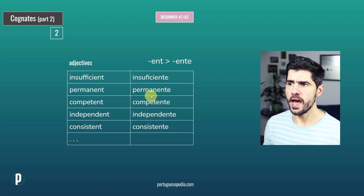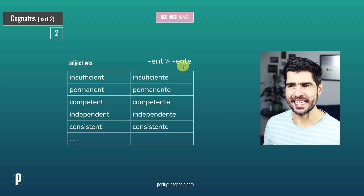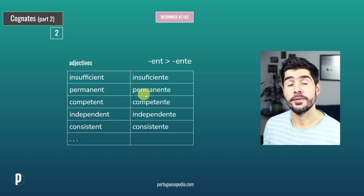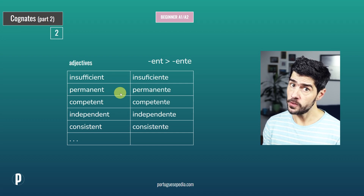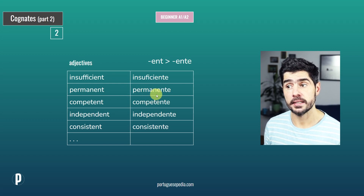Second group: we have the English suffix -ENT and then we add an E in Portuguese, making it -ENTE. So insufficient — insuficiente. Permanent — permanente. Competent — competente. The same thing applies with word stress — we are stressing the next-to-last syllable: insuficiente, permanente, competente.